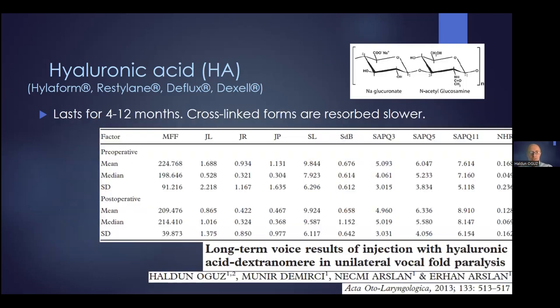How long does hyaluronic acid last in the tissue? Our own studies show that it does not last for one year. Most patients we see have results lasting three to nine months, with four to six months being a realistic expectation for the stay of hyaluronic acid in the tissue.